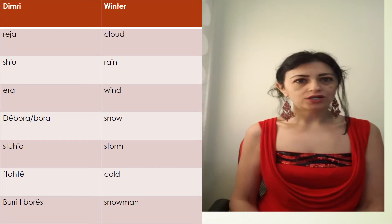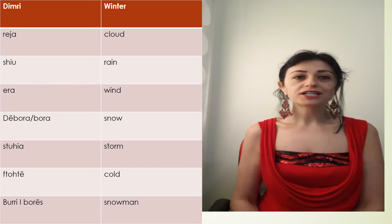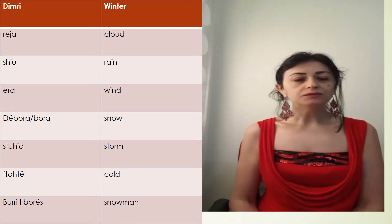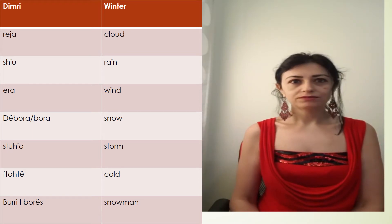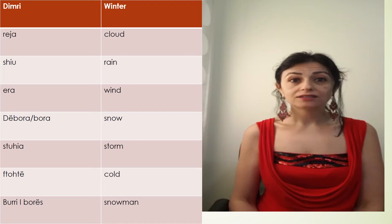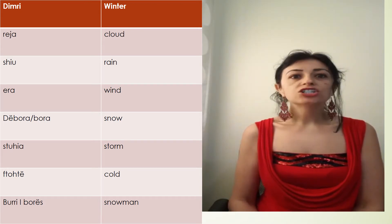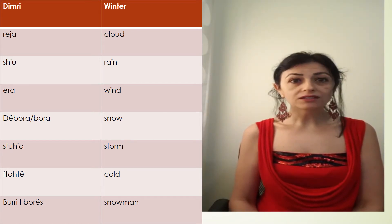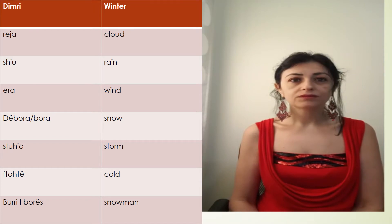All the words that you see here, they are in the definite form. So for example, winter in Albanian is dimri. Cloud is reja. Rain is shiu. Wind is era.